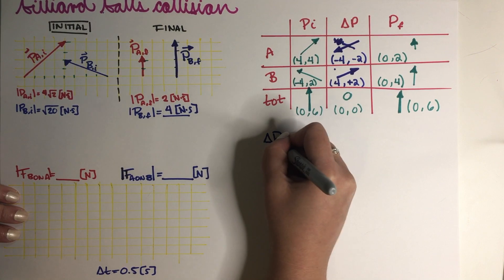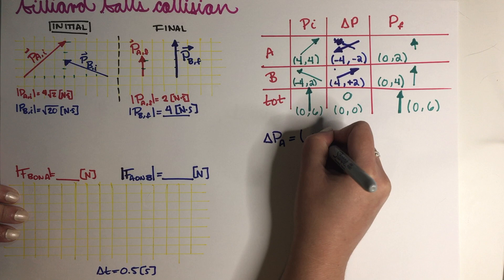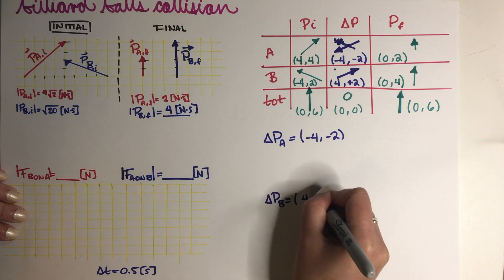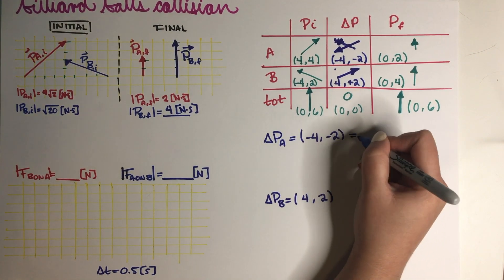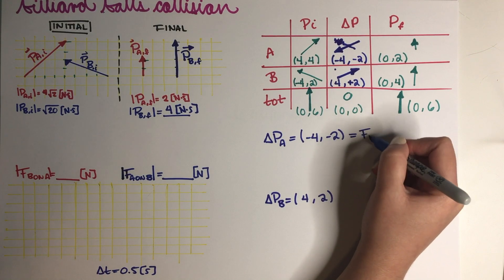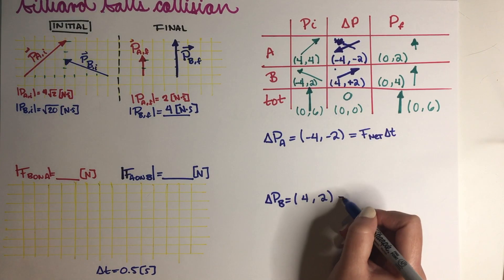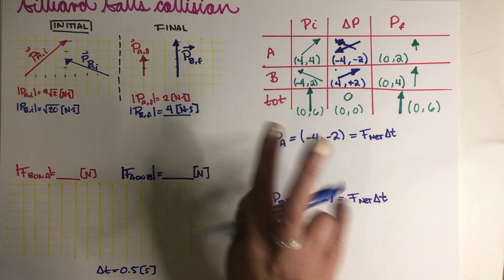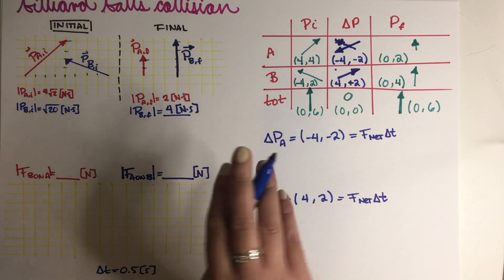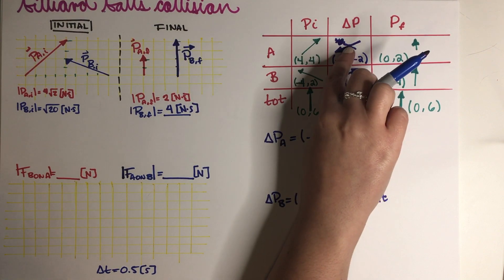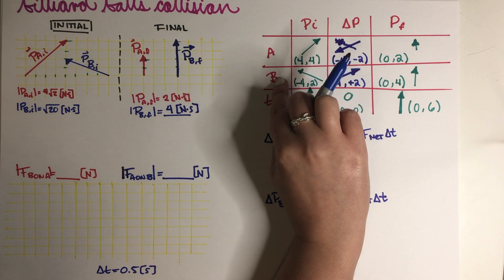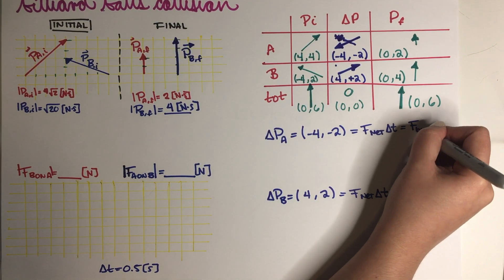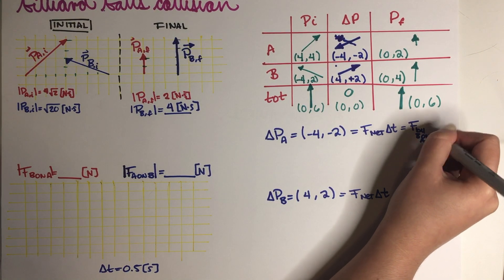So I'm just going to go ahead and write those down. Delta P for A is (-4, -2). Delta P for B is (4, 2). But we also know that by definition, delta P is equal to the net force times delta t. Now, in this case, we only have two objects on our system. And the only interaction that these objects have is with each other. So if A is feeling a net force in this direction, that is because B applied a force on A in this direction.